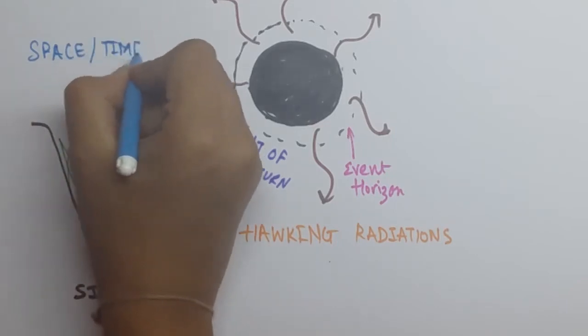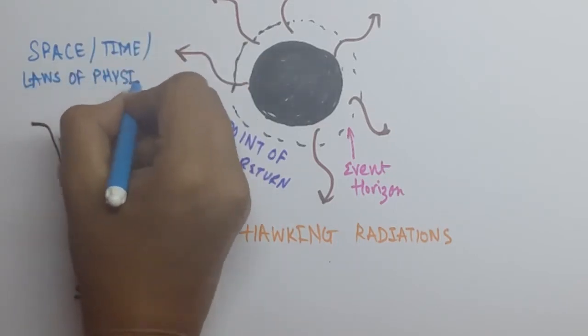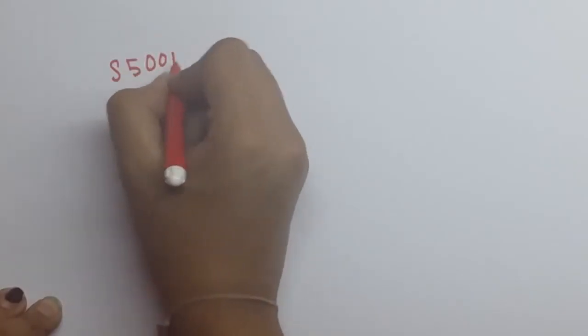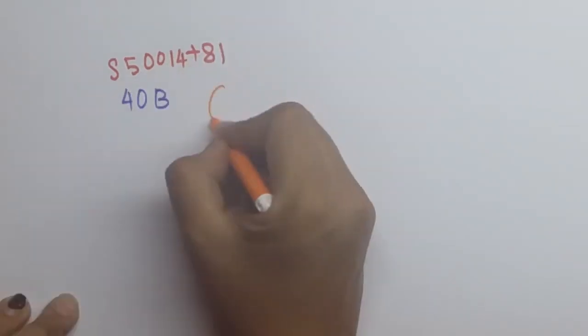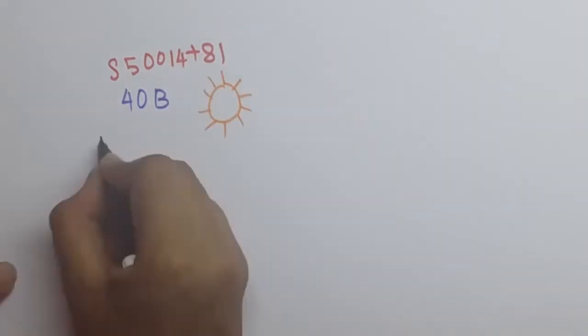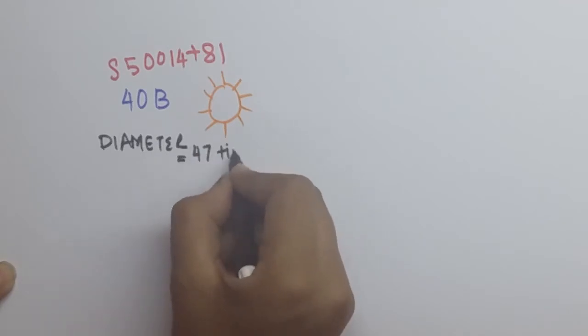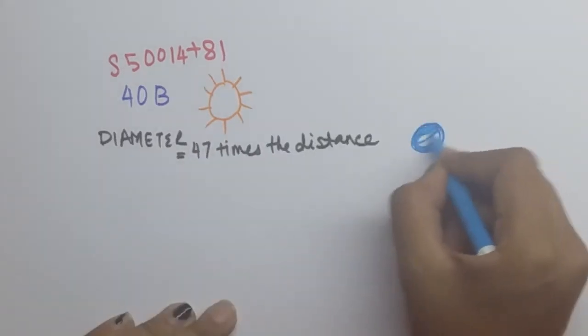The black hole is considered to be a singularity. The entire mass of the black hole is condensed at this point, and spacetime and the laws of the universe have no meaning here. The largest known black hole is the S5 0014+81, which is 40 billion times the mass of our sun and has a diameter of 47 times the distance between the Earth and the sun.